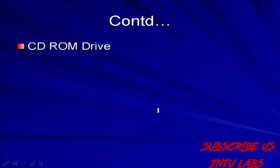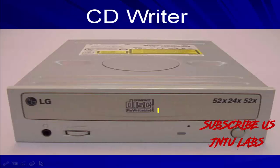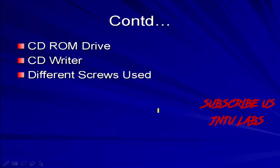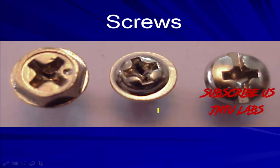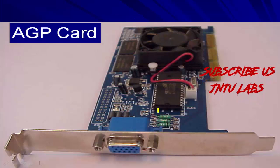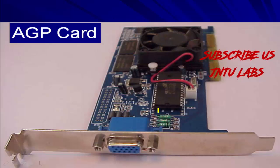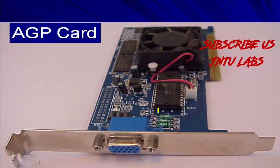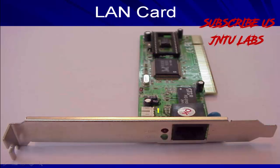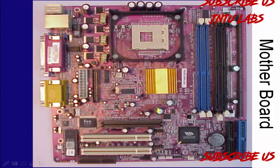And this is your floppy disk. And this is your CD-ROM. Different screws which are used here — this kind of screws we will be using. And the AGP card — AGP is nothing but a graphic card. And next is your LAN card — LAN is nothing but Ethernet, for net connection we will be using that.